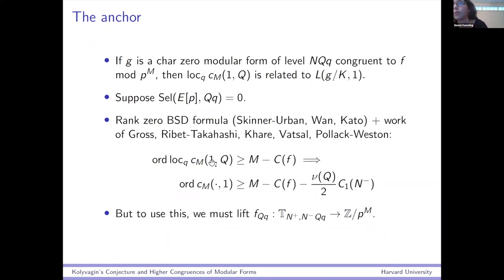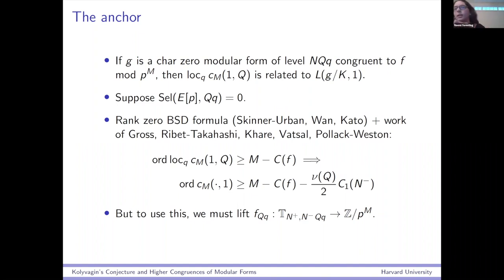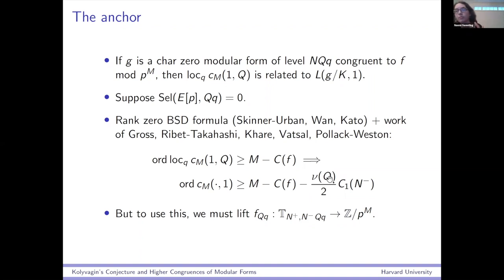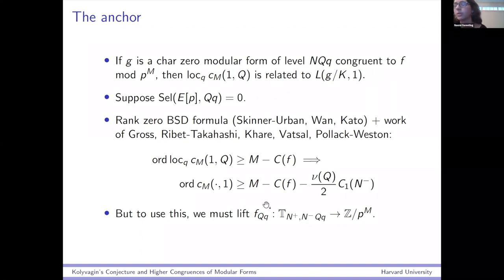From here, you can go down and get that the order of some class at level one is at least M minus a constant depending on F minus how many primes you had to put in times a constant depending on N_minus. If we're going to use this, F_{Q,q} cannot be just a mod P^M modular form — all this powerful stuff is not going to apply unless you genuinely have a lift. You can take M big enough because ν(Q) is also predictably bounded: we can know how many primes we're going to have to put into Q. If you just make M bigger than this other term, then the right-hand side will be strictly positive, and then you have non-vanishing.